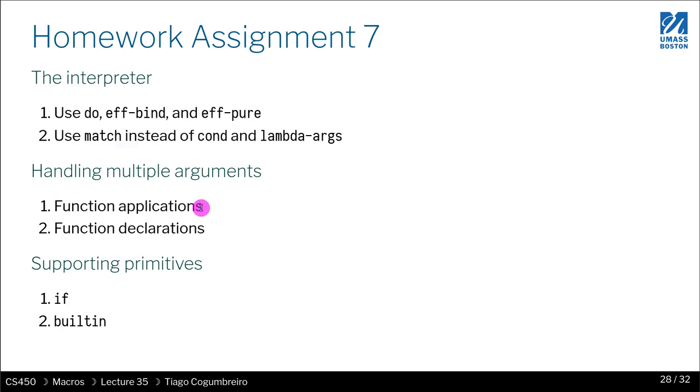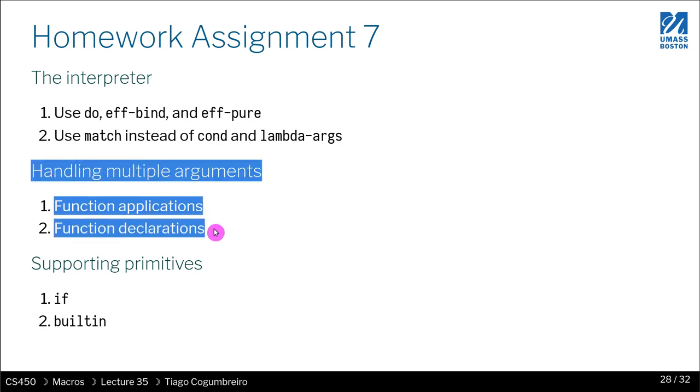Next thing you are going to be asked is to support multiple parameters and multiple arguments in lambdas and function calls. And this is merely a code transformation operation. You don't need to change your interpreter to support multiple arguments. This is the first foray into writing a source to source compiler, the same kind of skill that you would be doing if you were doing a macro.